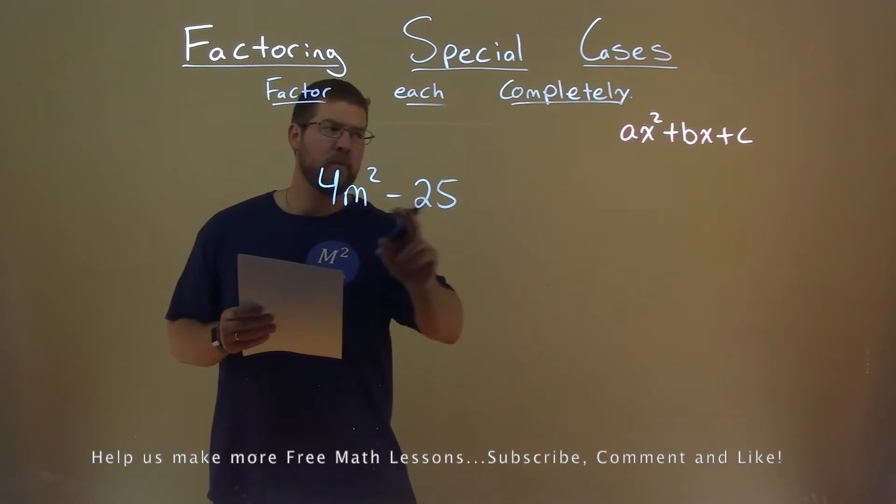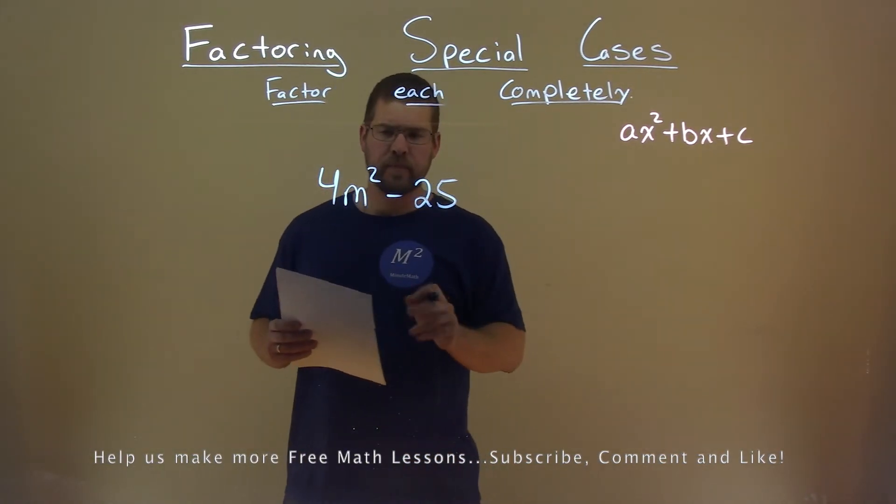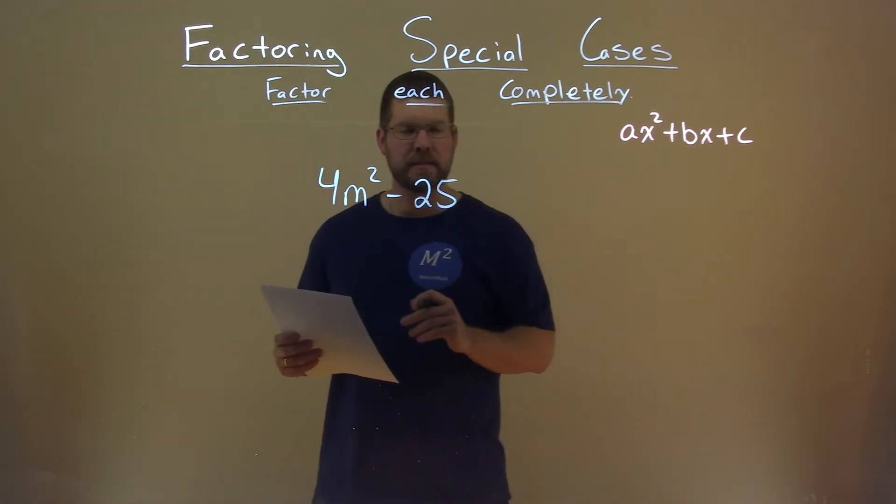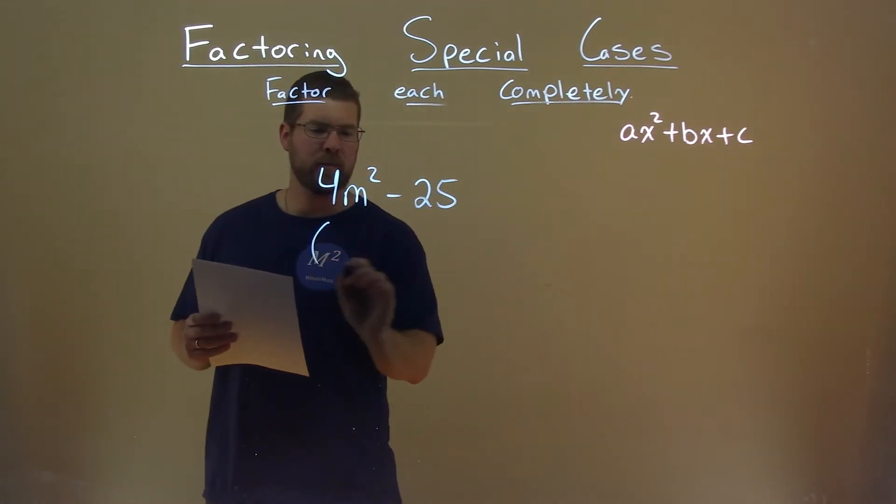Well, first thing I notice, no b value, b value is 0. My first value, my a here, is a perfect square, and so is my c. So, I know it's going to have some form like this.